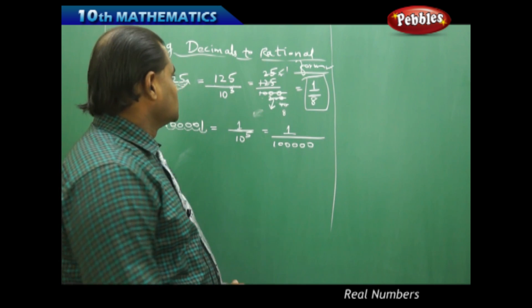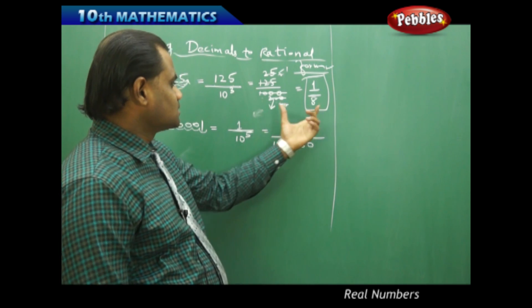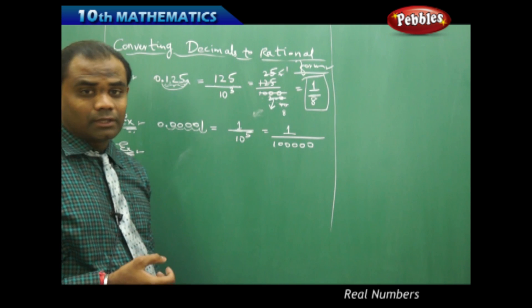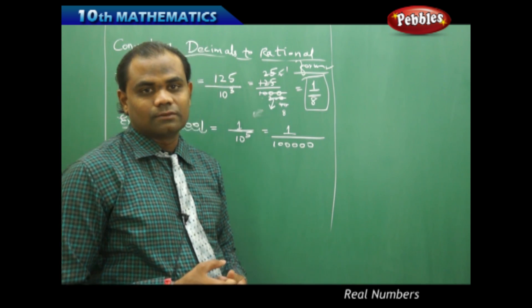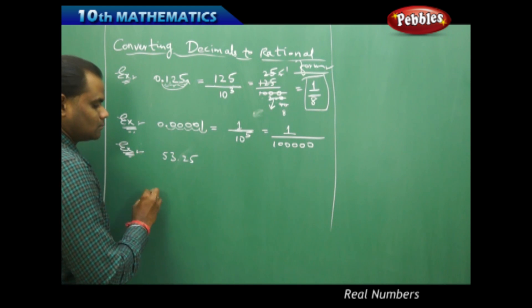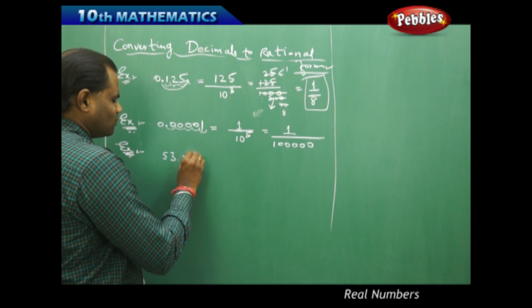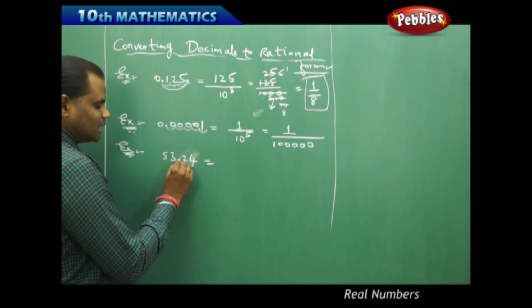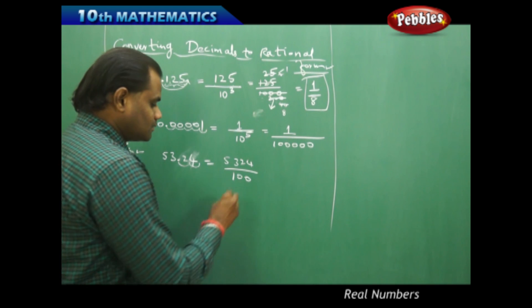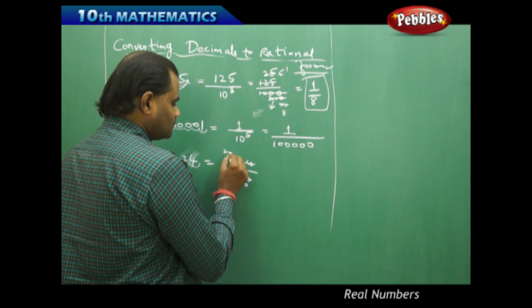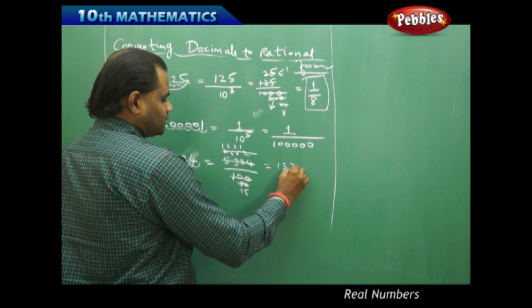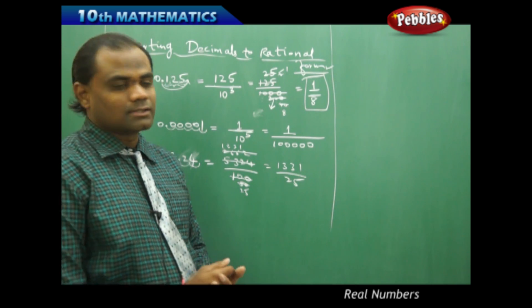We have discussed converting decimals to rational form. We also need to decide what we conclude from seeing different answers. So let's take one more example: converting 53.24 to rational form. Since the decimal has to move two steps to the right, I get 5324 by 10 squared, which is 100. On further simplification this gives 1331 by 25, which is the most simplified answer for the given decimal.